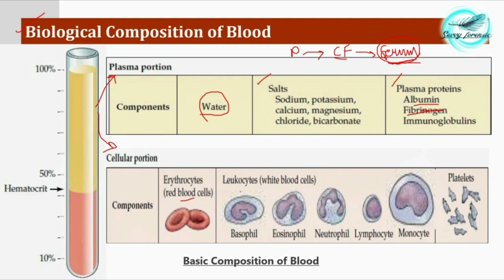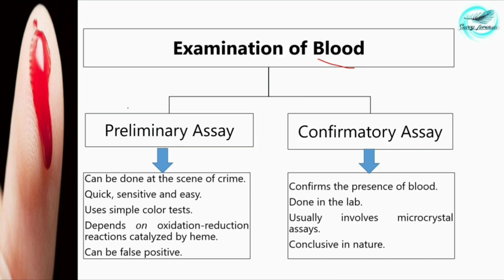The cellular portion consists of erythrocytes, leukocytes, and platelets. There are basically two tests for blood identification: the preliminary assay, which gives the possibility that a particular stain is blood, and the confirmatory assay, which confirms the presence of blood. Preliminary assays are carried out at the scene of crime — they are quick, sensitive, and easy, giving results in seconds. They use simple color tests based on the oxidation-reduction reaction — this is the principle of preliminary examination.